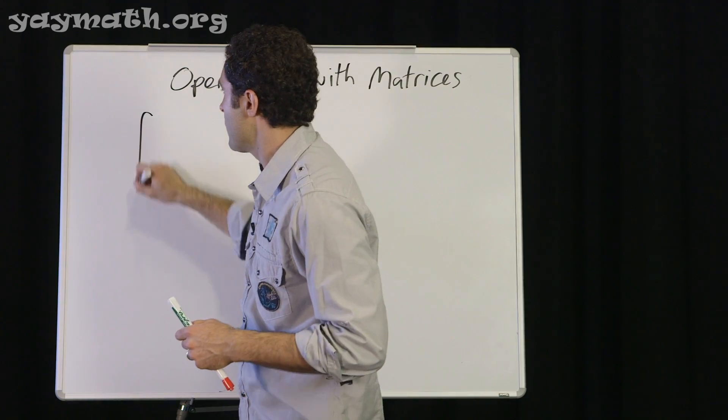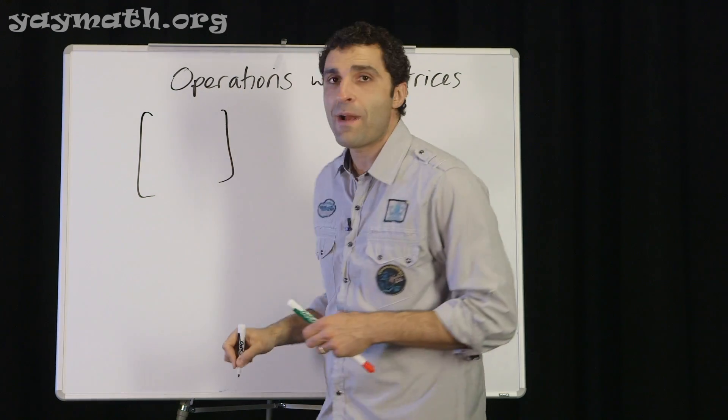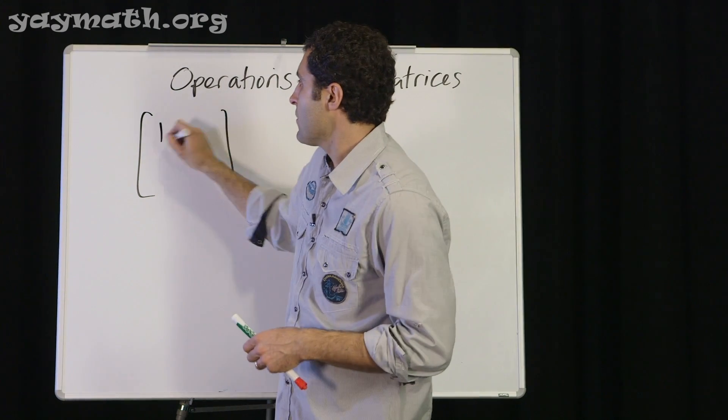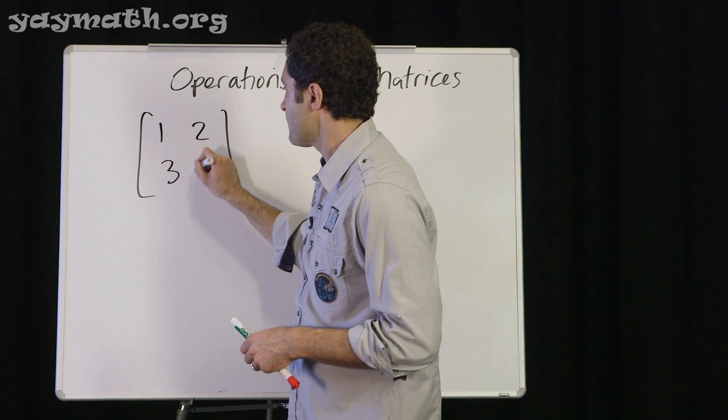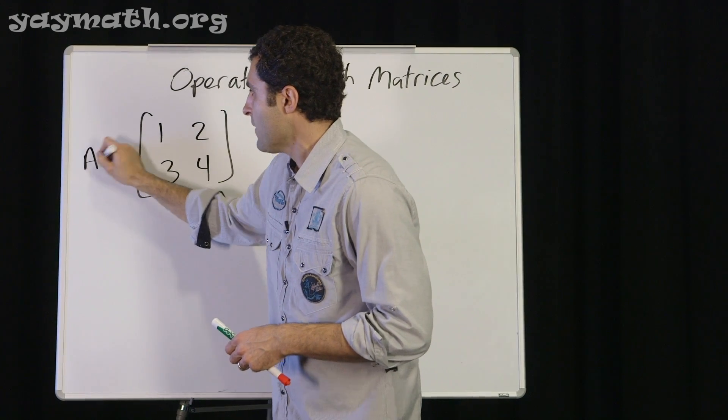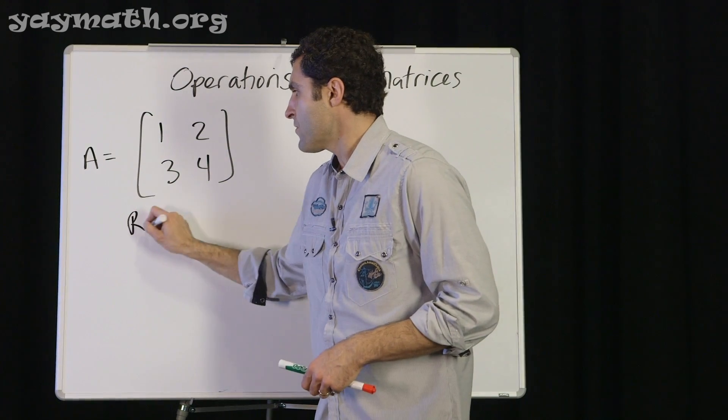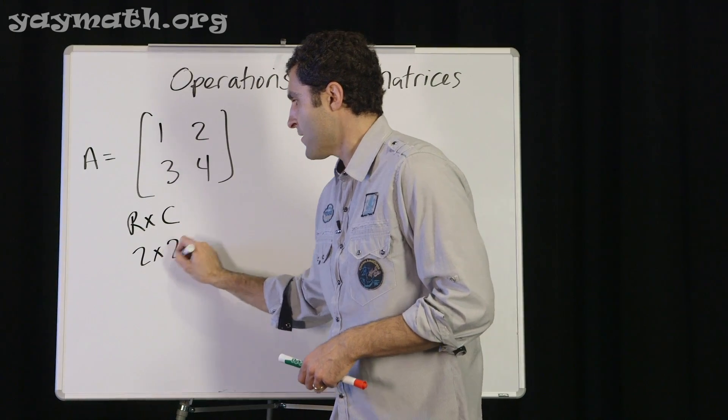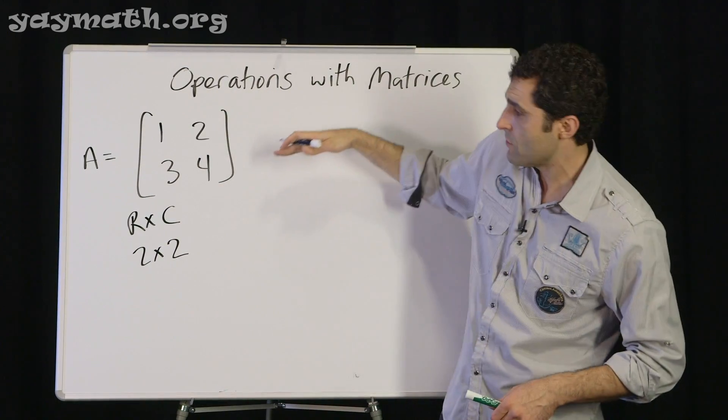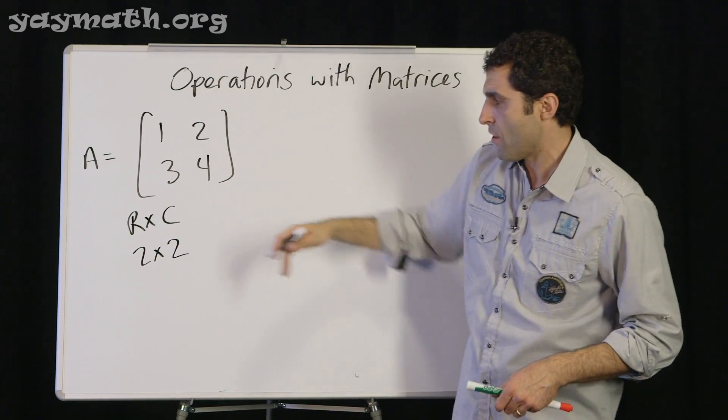This is how it goes. So let's say you have a two by two matrix. Let's do like one, two, three, four. We can call this matrix A. Okay. Two by two meaning rows by columns. Two by two. Two rows, two columns.